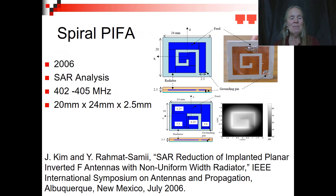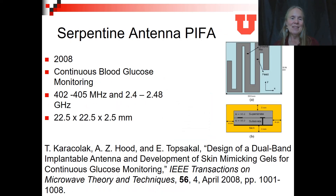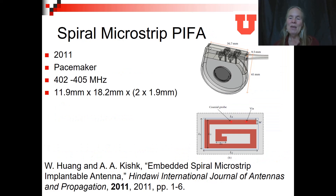The spiral antenna PIFA appeared again in 2006 for SAR analysis, and the serpentine antenna in 2008, used for continuous blood glucose monitoring. The spiral microstrip PIFA was seen again in 2011 in work by Huang and Kish at 402 to 405 megahertz on a rounded pacemaker. By this point things were starting to get a little smaller, beginning to strain the capability of antenna design.